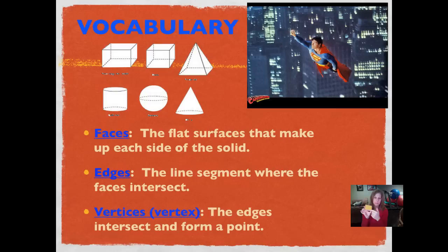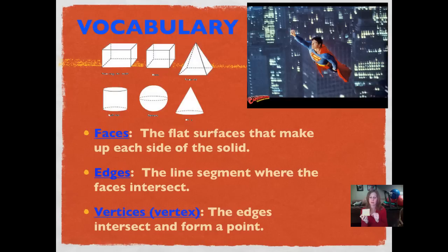Edges go around the base, and then edges connect the faces on the side. The vertices are the points where the edges meet. So here's a vertex, and a vertex, and a vertex. When we have more than one, we say vertices. We would have one, two, three, four, five, six vertices on this figure. I've put some pictures of different solid figures up there — a rectangular prism, a cube, a square pyramid, a cylinder, a sphere, and a cone.